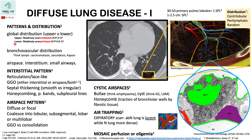For the lower lung zones, they are relatively over-perfused. Pathologies that travel in the blood or lymphatics — such as hematogenous metastasis — will lodge in the lower lung zones because of greater perfusion and blood flow there. The same is true for interstitial lung disease, where immune complexes deposited in the lungs are responsible for fibrosis. Interstitial lung diseases are therefore lower lung zone predominant.